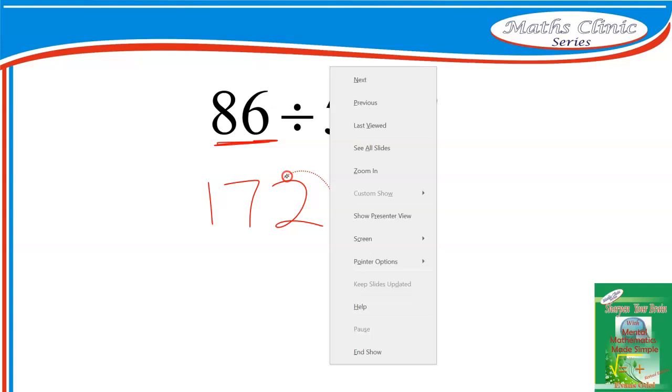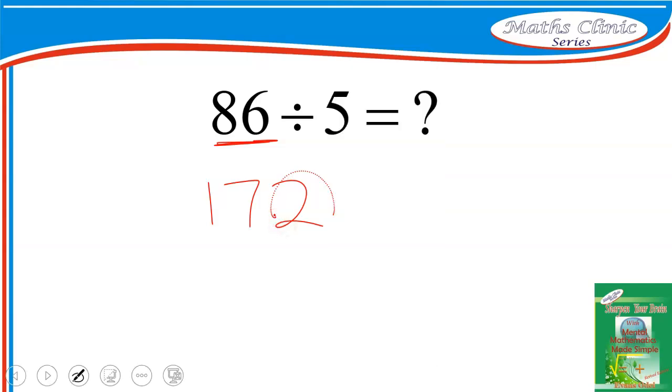Decimal point is here, so you move backwards once and so we have 17.2 to be the answer for 86 divided by 5.